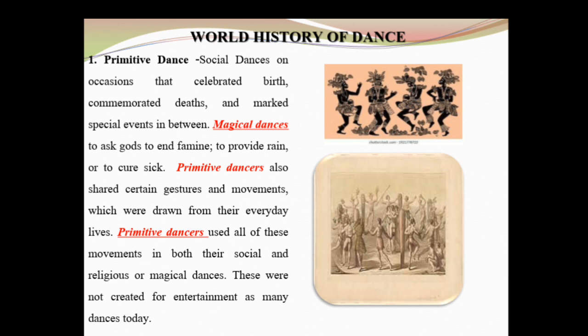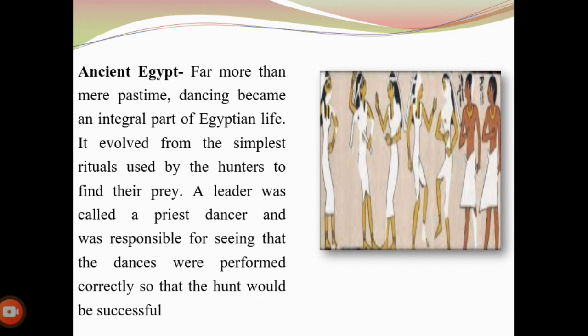Next is ancient Egypt. These talk about manifesting. Among the Egyptians, dancing is a part of their life, and this evolved from the simplest ritual used by the hunters. They also gave it the name 'Priest Dancer.' Among the Egyptians, it was important that the dances were performed correctly.